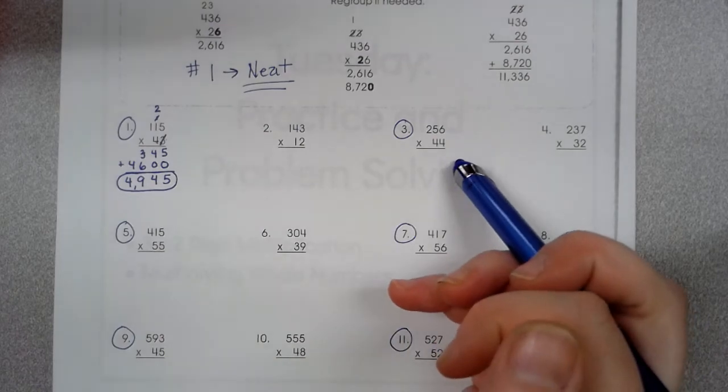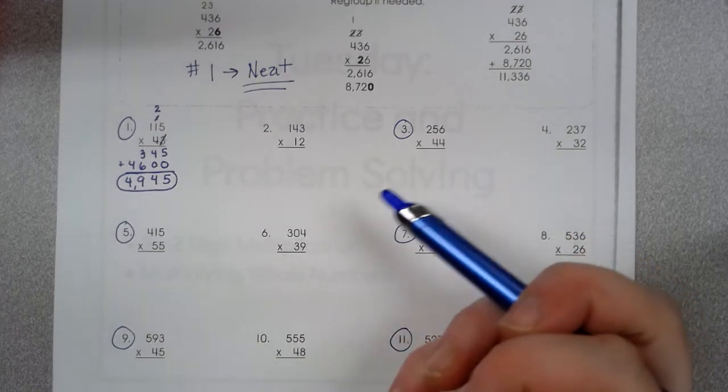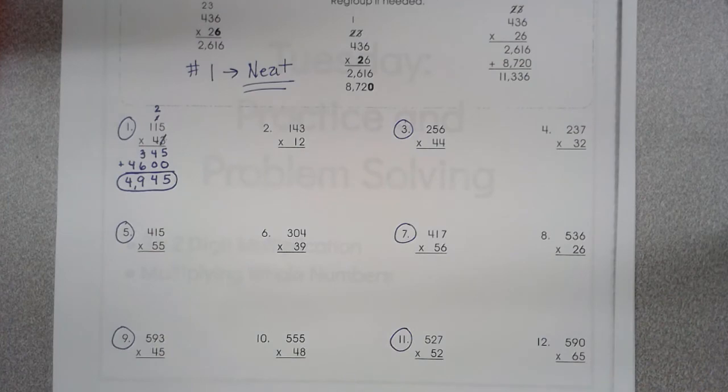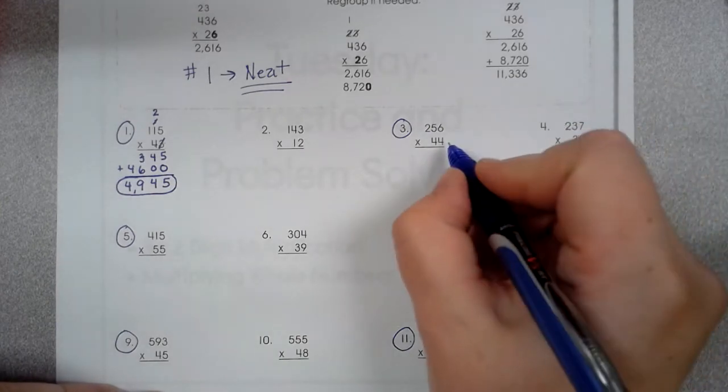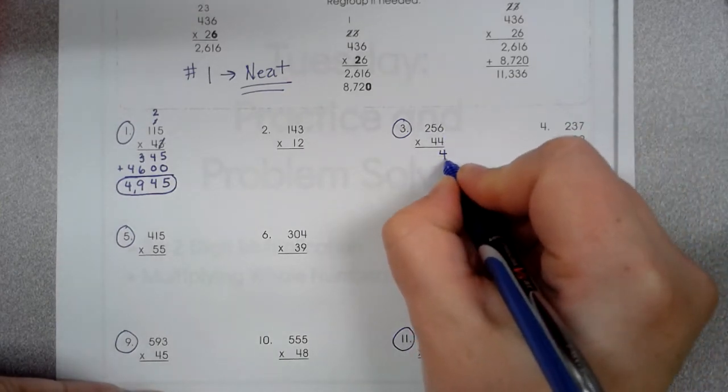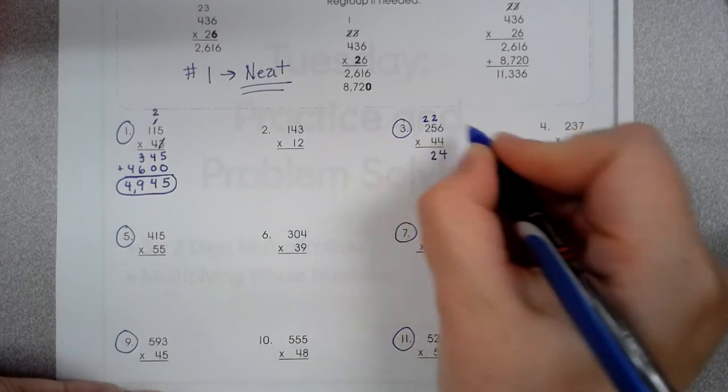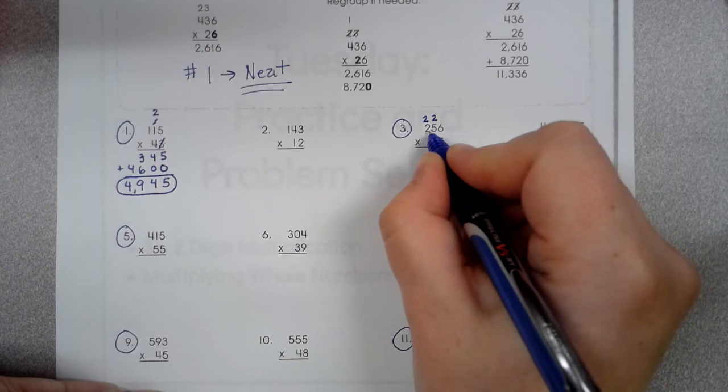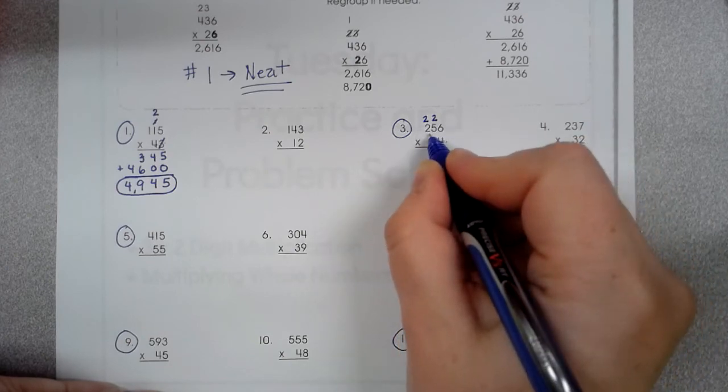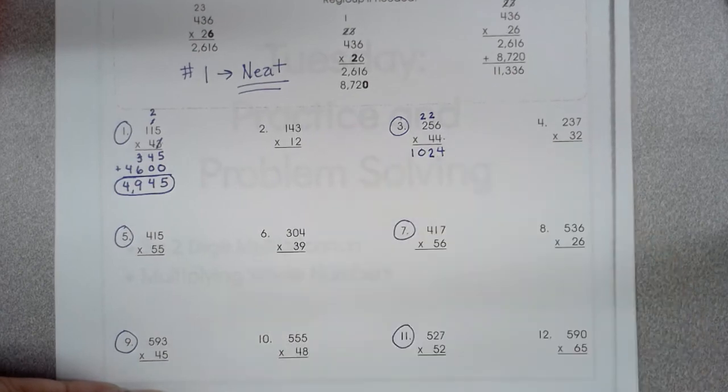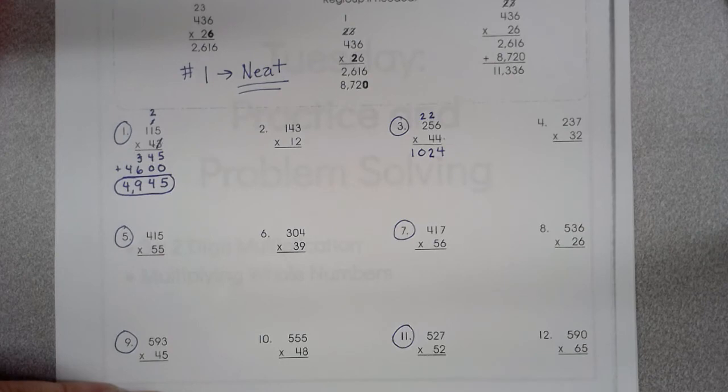Next one I have number 3. 256 times 44. Now one of the good things about when you have repeating numbers like a 44, 55, 77 or whatever, once you get the first one done, you just add a 0 and you copy that answer now. I'll explain here in a second. 4 times 6 is 24. Carry my 2. 4 times 5 is 20, plus 2 is 22. 4 times 2 is 8, plus 2 is 10.